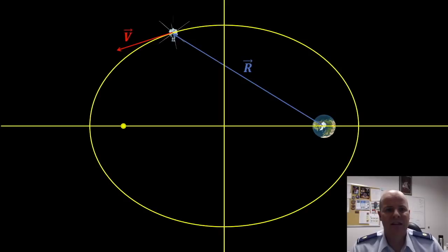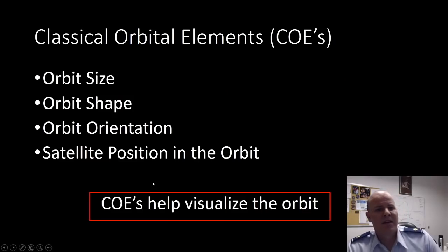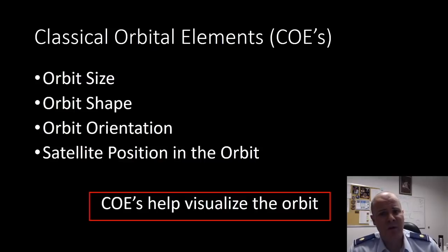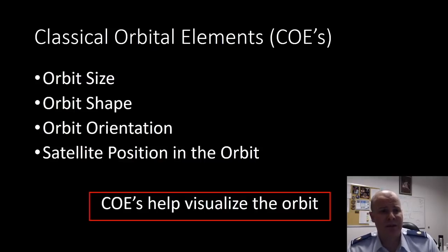For this task, we rely on Kepler. Kepler developed the classical orbital elements, or COEs, to describe the orbit's size, shape, and orientation, and the spacecraft's place within them.